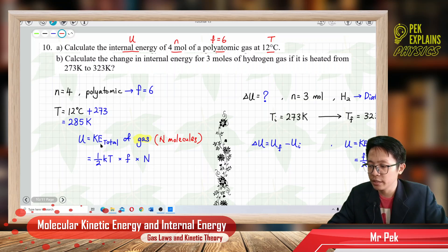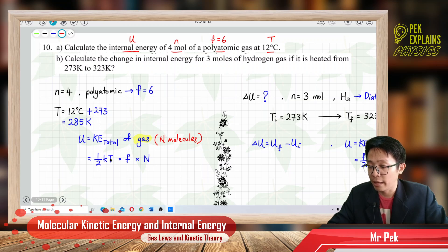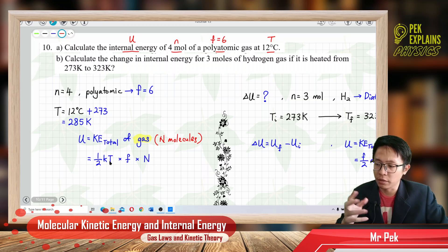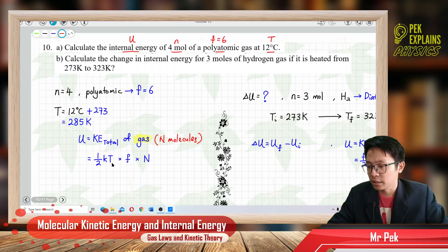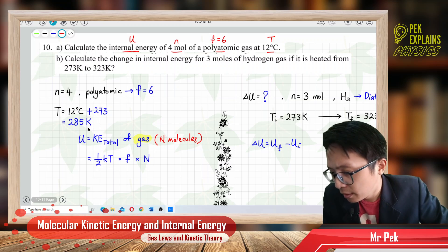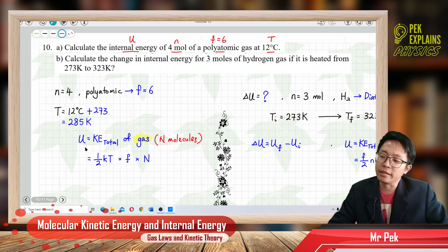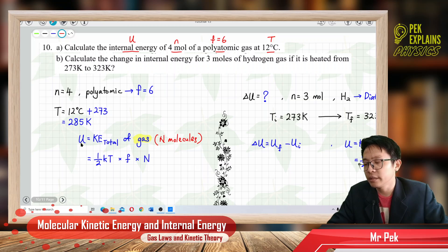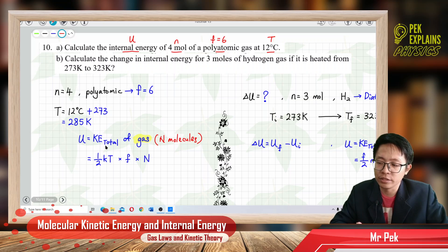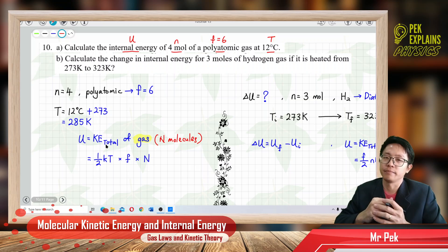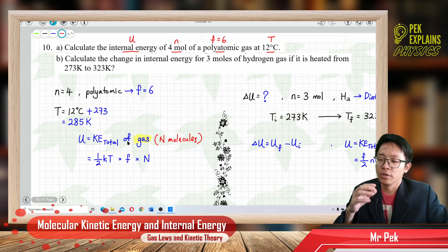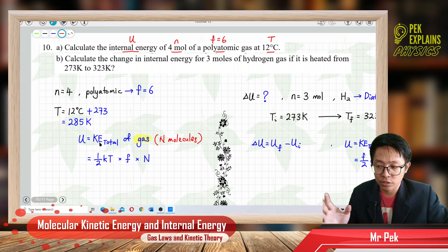Before we use this equation, when we substitute the temperature, remember this temperature needs to be in Kelvin. You put degrees Celsius and it's wrong already. The temperature needs to be in Kelvin. So what is the internal energy of gas? Internal energy of gas is the same as the total kinetic energy of the whole gas.